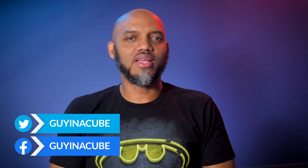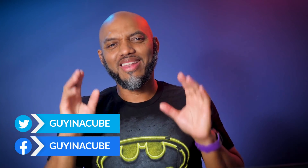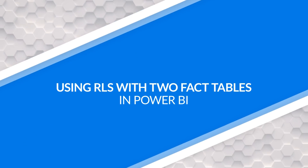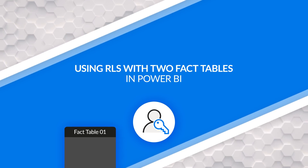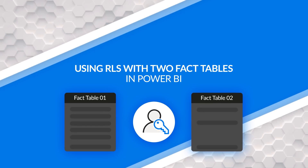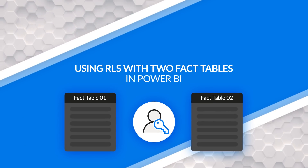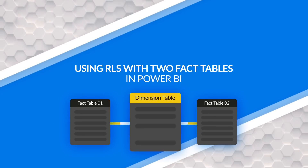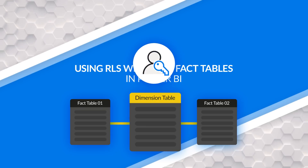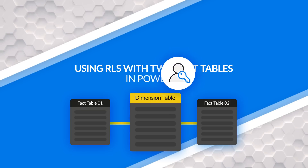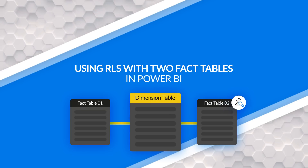What's up? This is Patrick from Guy in a Cube. In this video, I'm gonna show you how to set up RLS when you have two fact tables connected to one dimension and you only want RLS to affect one of those fact tables.